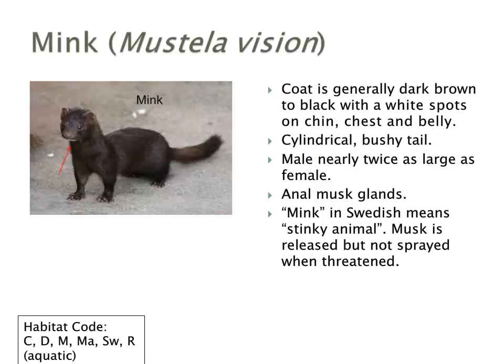The mink has a very dark brown to black fur coat and a very cylindrical bushy tail. It has anal musk glands and is of course used in the coat industry. One of the key features is that, despite having a very dark brown coat, underneath its chin it has a white patch — a white spot right underneath its chin. That's one of its unique identifiers.